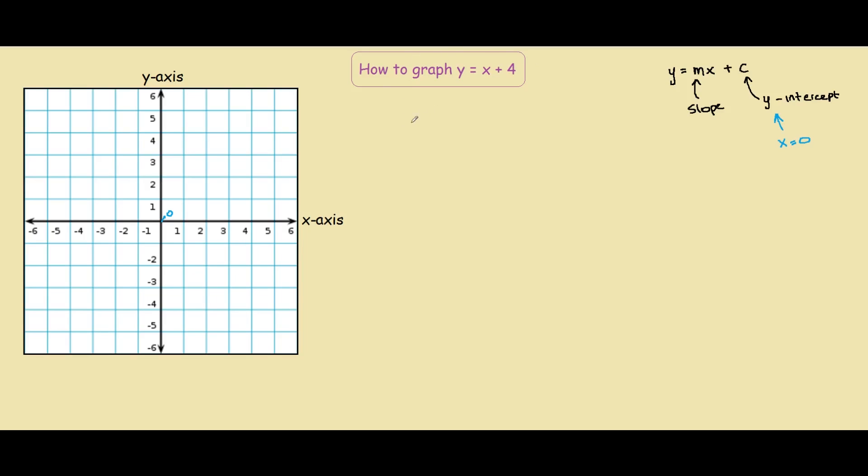So for this case, we have y equals 0 plus 4 if we substitute x equals 0. So this equals 4. Therefore, we found one point on our line. The y-intercept is when x equals 0 and y equals 4. 0, 4. So we have one point right here.